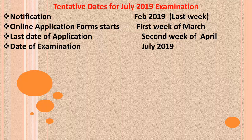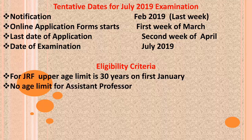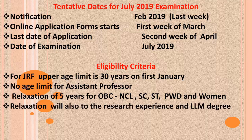Now, the eligibility criteria. For JRF, the upper age limit is 30 years as of 1st January. There is no age limit for Assistant Professor. There is a relaxation of 5 years for OBC (NCL), SC, ST, PWD, and women candidates.